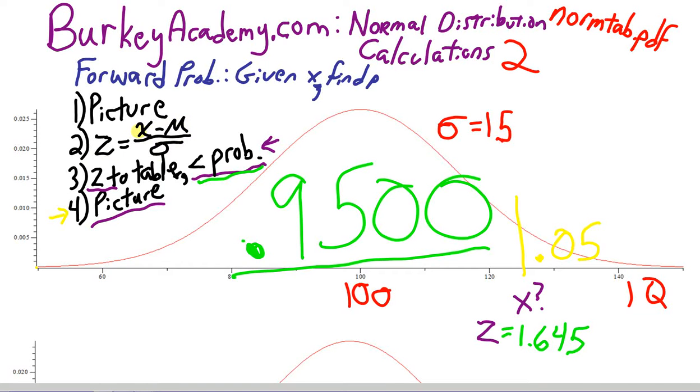So, in a backwards problem, what I like to do is, if you solve this for x, what we're going to do is multiply both sides by the sigma, and we get x minus the mean equals z times the standard deviation. And then, when we add the mean to both sides, we're going to end up with a formula like this. It's the same formula, we're just rewriting it slightly. That x equals the mean plus z times the standard deviation.